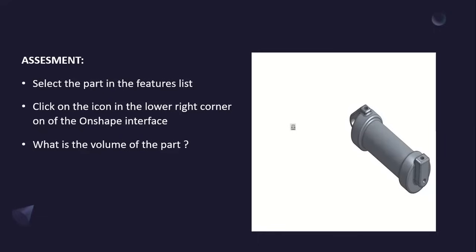For assessment: select the part in the features list and click on the icon in the lower right corner of the Onshape interface. What is the volume of the part?